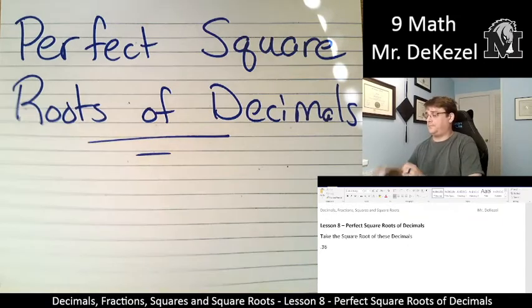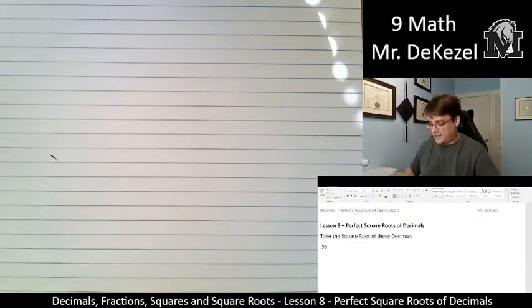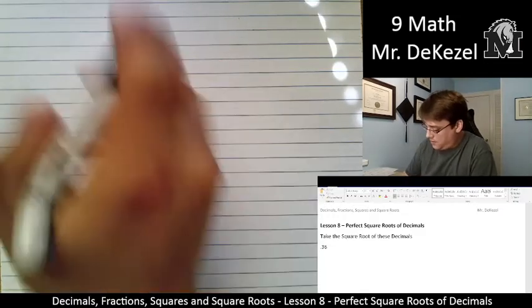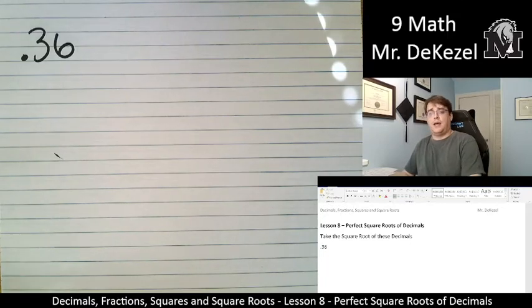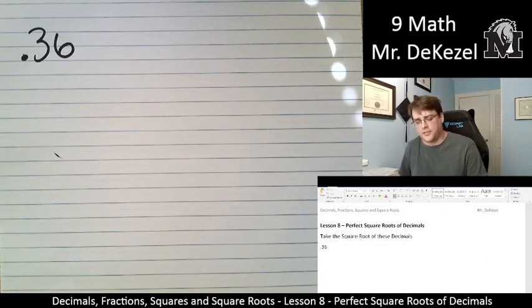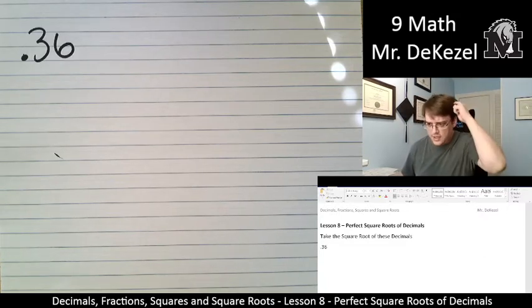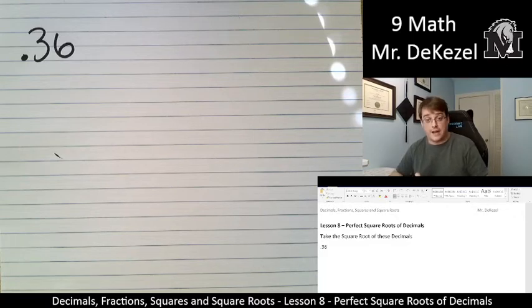Okay. We have 0.36 as our first problem, and the thing that we need to do is we need to turn it into a fraction. It's difficult to square root decimals. It is easy, as we learned last time, to square root fractions as long as they're the right fractions.